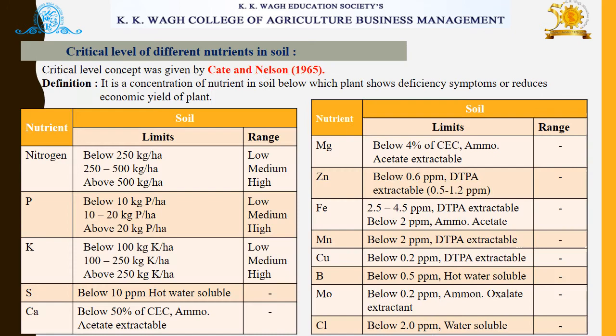The critical level of different nutrients in soil is the concentration of a nutrient in soil below which the plant shows deficiency symptoms or reduces the economic yield of the plant. This is also called the critical limit, as given by Cate and Nelson in 1965. Both tables show nutrients with their limits in soil and plant, along with their ranges.